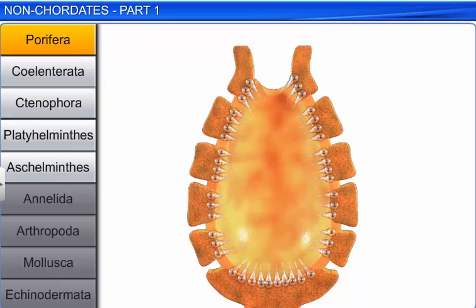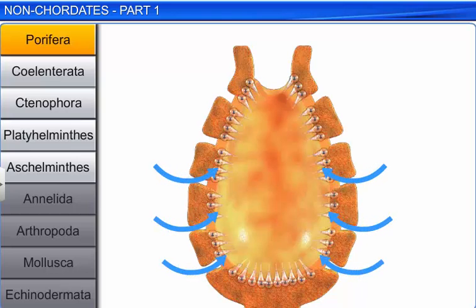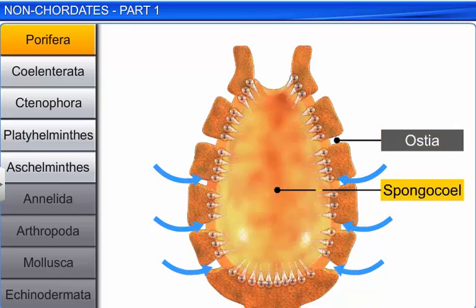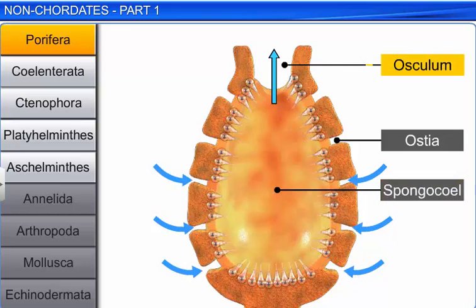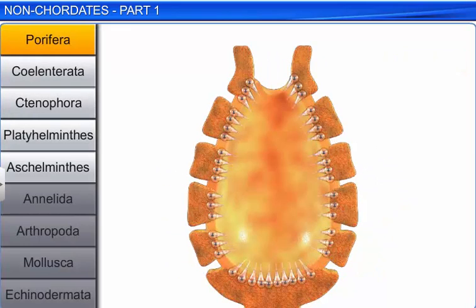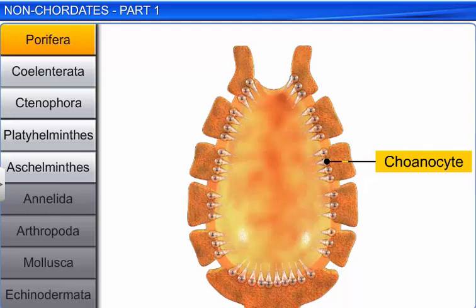In this system, water enters through minute pores called the ostia, into a central cavity called the spongocoel, and comes out through the osculum. The spongocoel and the canals are lined with special cells called choanocytes, or collar cells, that help in the ingestion of food particles, followed by intracellular digestion.